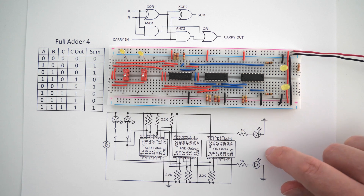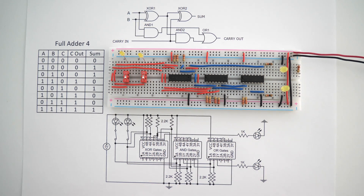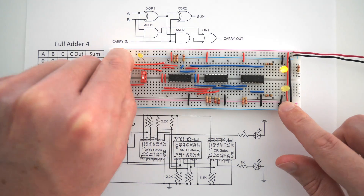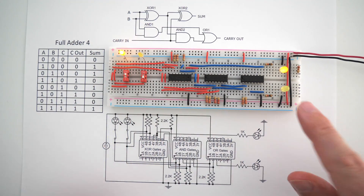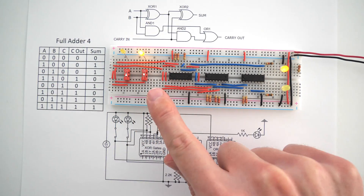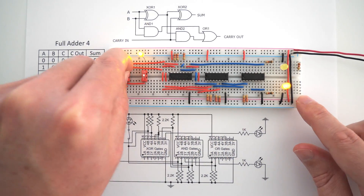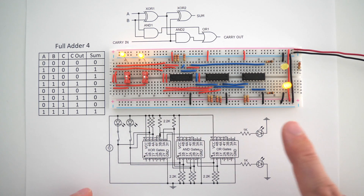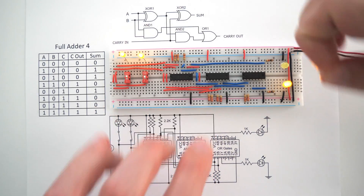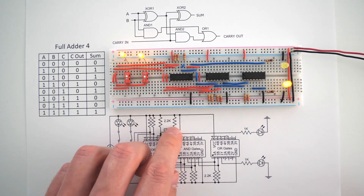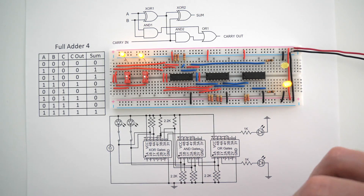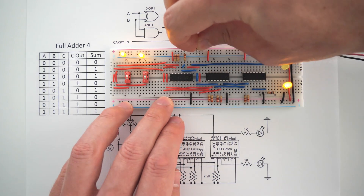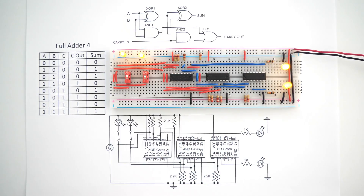Now let's test the circuit to see if it's working properly. We have 1 plus 0 equals 1, then 0 plus 1 equals 1, then 1 plus 1 equals 2, which is 1, 0 in binary. Finally, we'll add this resistor into the carry in — the carry in is this 2.2K resistor right here. And now we have 1 plus 1 plus 1 equals 3, which is 1, 1 in binary.